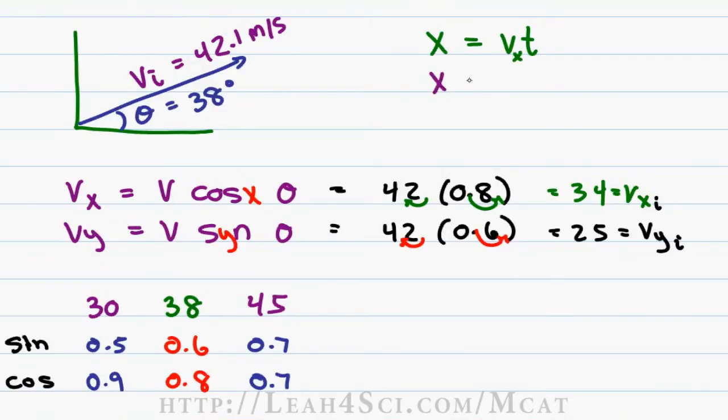Going back to our initial equation, we have that x equals Vx of 34 meters per second but we still need the time. In order to find the time, we have to use the y components to see how long it takes this projectile to get to the top but remember that's only half of the total time. You have the time it takes the ball to get to the maximum height and then the same time for the ball to get from the maximum height down to the starting height.